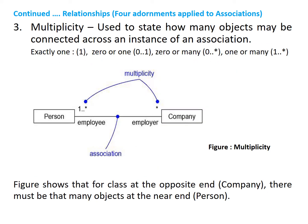The next adornment is multiplicity. In many modeling situations, it is important to state how many objects may be connected across an instance of an association. Multiplicity can be exactly one, zero or one, many (that is, zero..* or one or more). You can also state an exact number, just like the number four. This figure shows the multiplicity at the end of Person as one..*, that is one or more, and at the end of Company the multiplicity is shown as * or asterisk, that is zero or more.